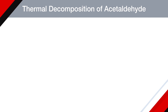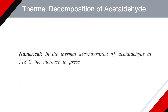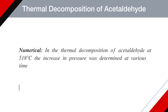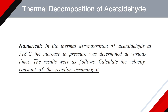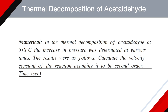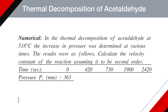For practice, try to solve this numerical: In the thermal decomposition of acetaldehyde at 518°C, the increase in pressure was determined at various times. Calculate the velocity constant of the reaction assuming it to be second order. Time values given are 0, 420, 730, 1900, and 2420 seconds, and the corresponding pressures are 363, 397, 417, 477, and 497 mm Hg. Try to solve this yourself and check the answer in the comment box.